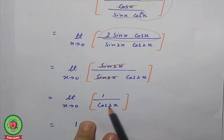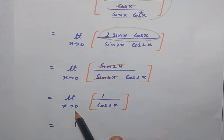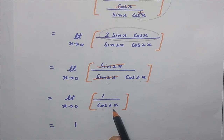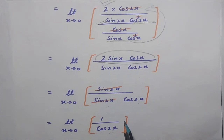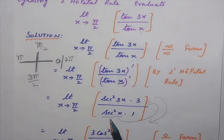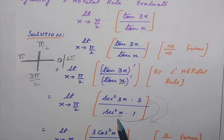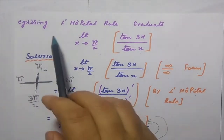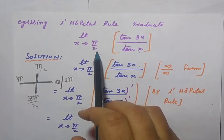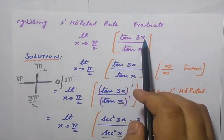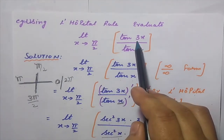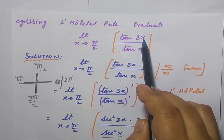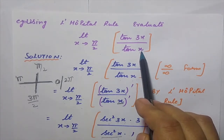When we approach zero, cos(0) equals 1, so 1 upon 1 equals 1. The answer to Example 1 is 1. Now I am taking one more example for further understanding: limit as x approaches π/2 of tan(3x) upon tan(x). When we approach π/2, tan(3π/2) is infinity and tan(π/2) is also infinity, so this is an infinity by infinity form.